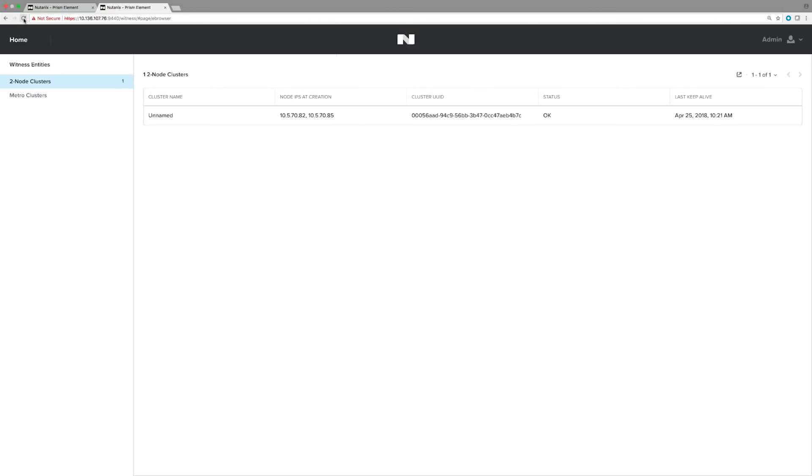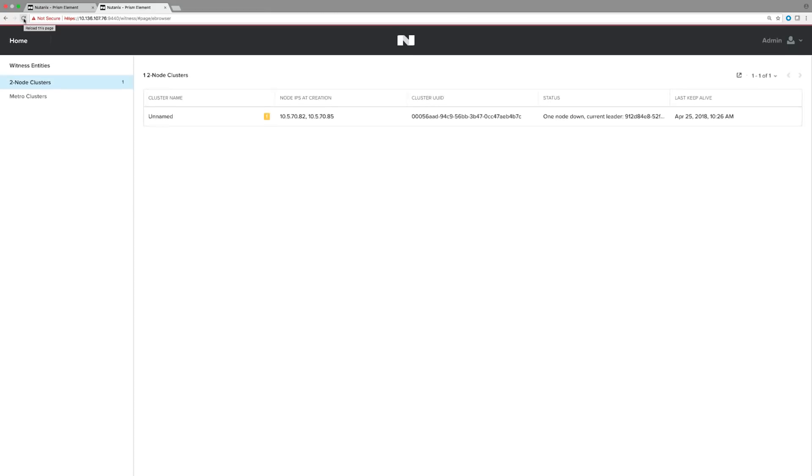Now there's going to be a delay of more than 10 seconds between node A and node B. And Genesis is going to timeout. Now as you can see that in the witness page, there is an update that one node is down, which is node B in this case. And node A has been picked as a leader.